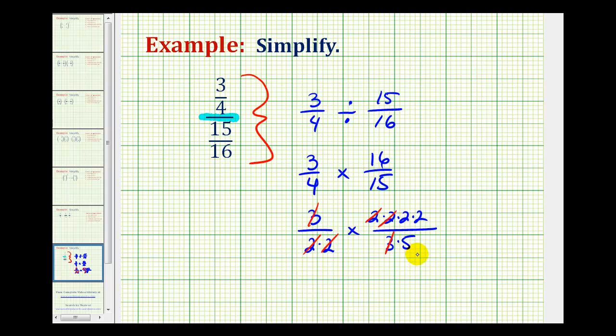Now we can multiply, knowing the product will be in simplest form. So in the numerator, we have two times two, which is four, and the denominator is just five.